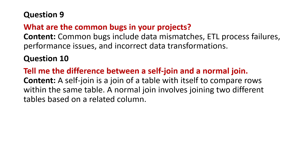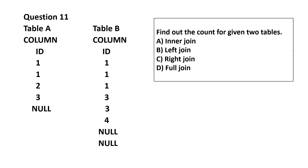Question: What is the difference between a self-join and a normal join? A self-join is a join of a table with itself to compare rows within the same table. A normal join involves joining two different tables based on related columns from each table.